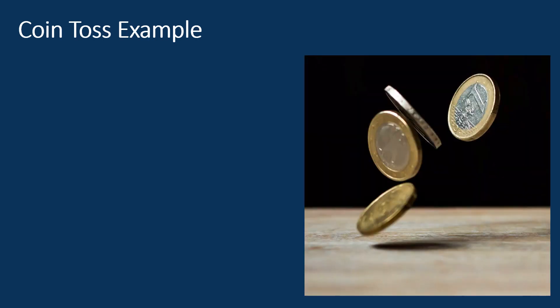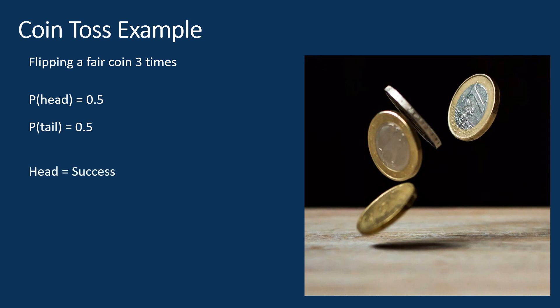Let's explore an example. Imagine you are flipping a fair coin three times. The coin has two sides: heads and tails. The probability of getting heads is 0.5 and the probability of getting tails is also 0.5. In this example, getting heads can be considered a success while getting tails is a failure. So how can we use the binomial distribution to understand this situation?